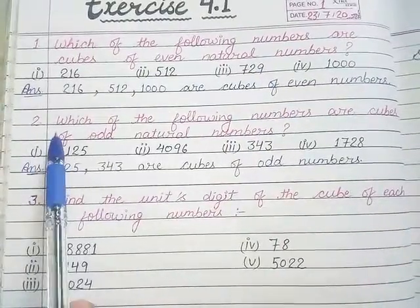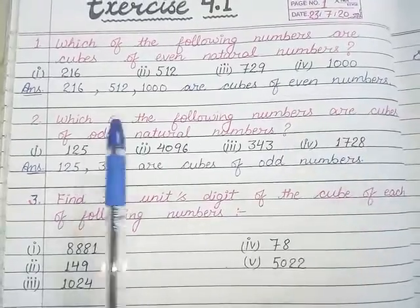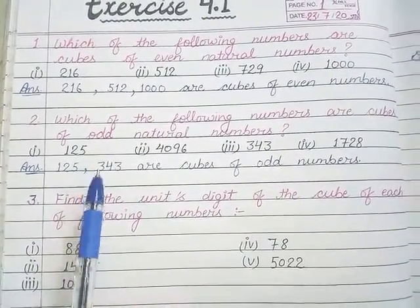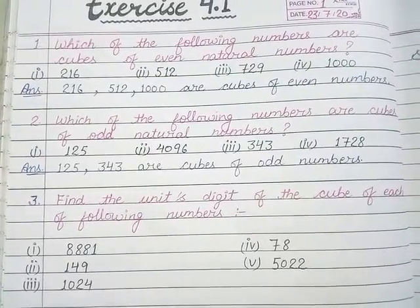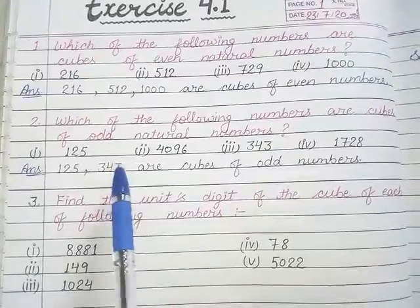In the next question, we ask which are the odd natural numbers' cubes. So you also find out odd numbers, because we know that the odd natural numbers' cubes are odd. So you can do it yourself.